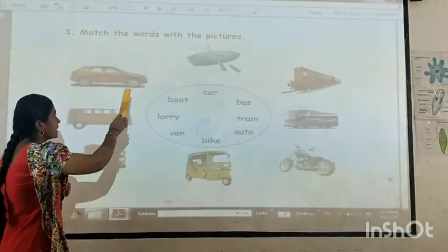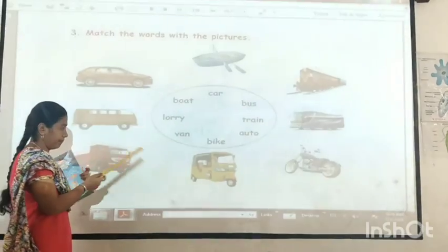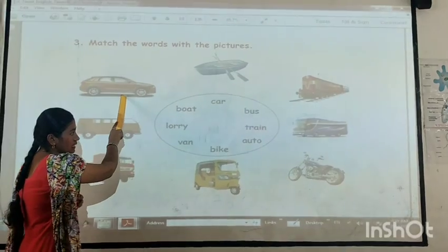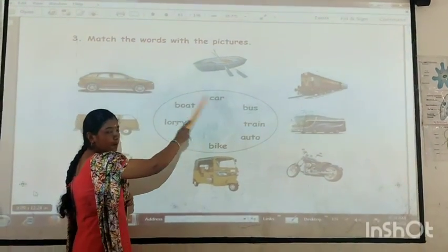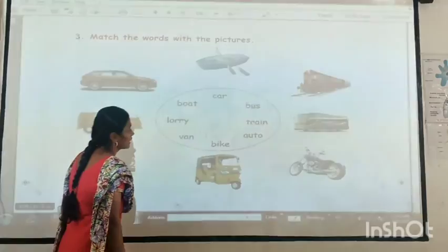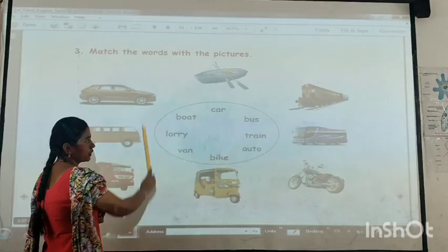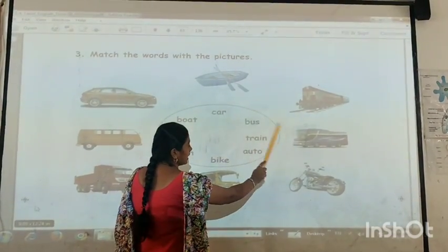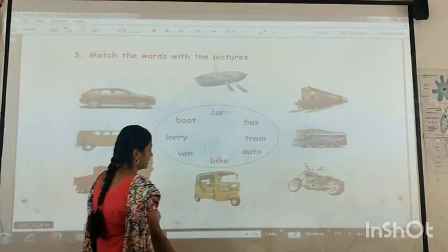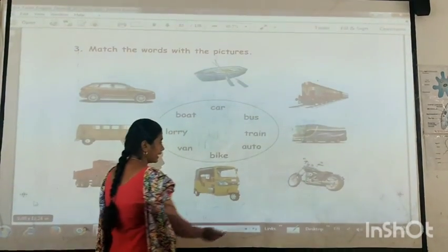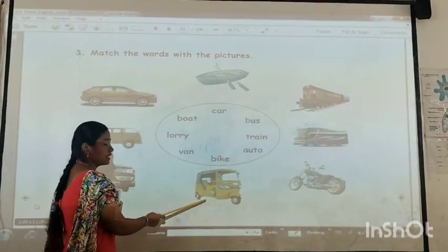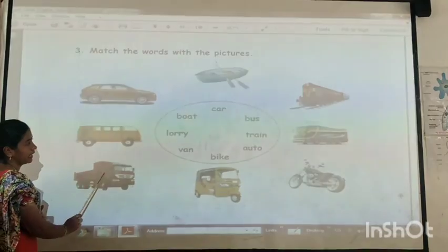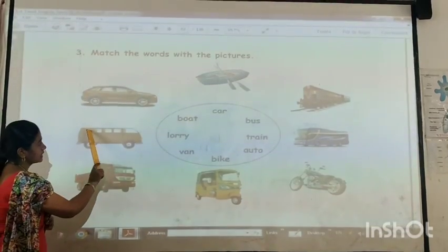Match the words with the picture. First — this is a car. This one is a boat. This one is a shrine. This one is a bus. And this is a bike. This is an auto. And this one is a lorry. And this is a van.